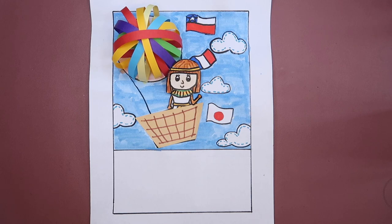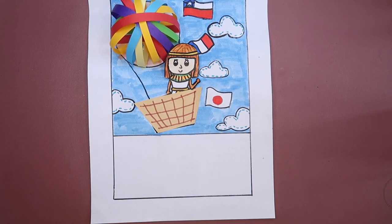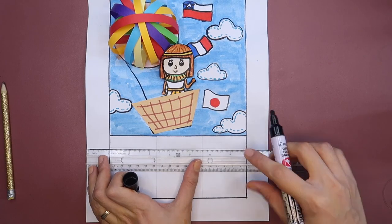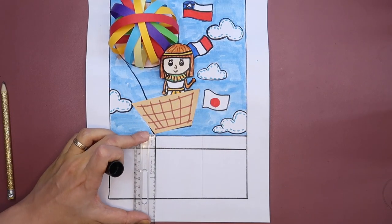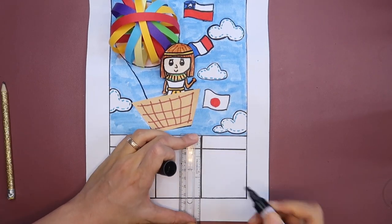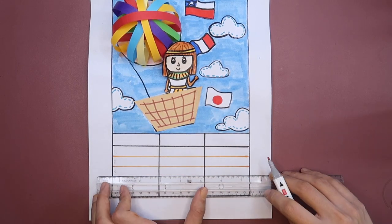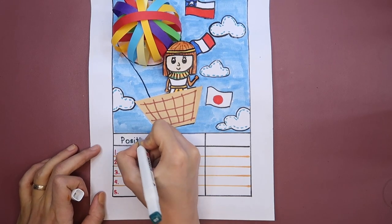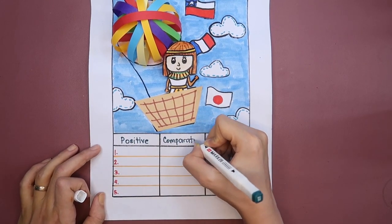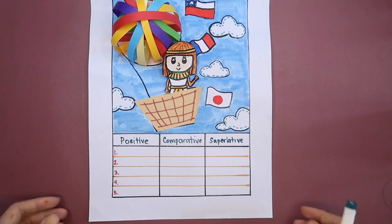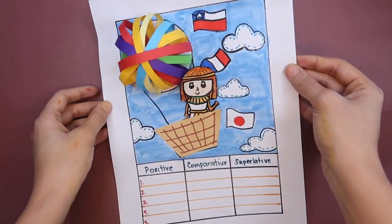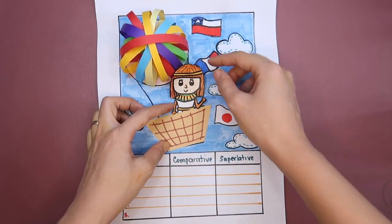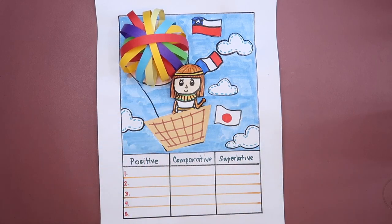There you have it! Now it's time to describe your artwork using adjectives. Create a table with three columns and label it with the degrees of comparison. Complete the table using different adjectives describing your work. And once you're done, take a photo of your work and pass it.